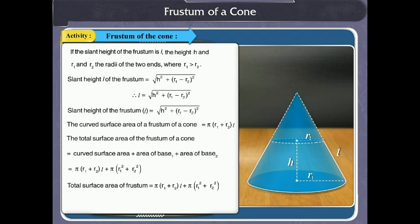The volume of the frustum is equal to one upon three into π into bracket r1 squared plus r2 squared plus r1 into r2 into h.